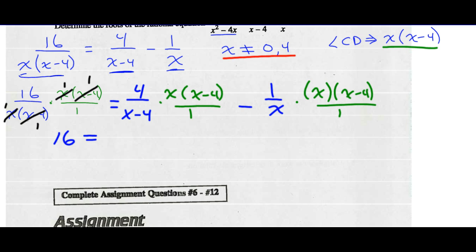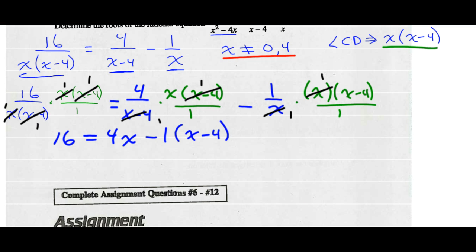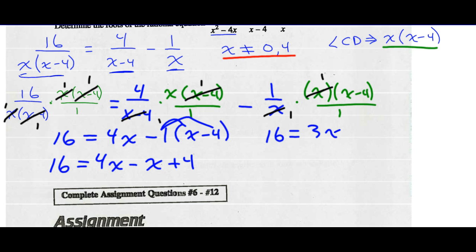The first term becomes 16. For the second term, x minus 4 divided by x minus 4 reduces to 1, leaving 4 times x over 1 — so that's just 4x. For the last term, the x reduces to 1, leaving negative 1 times x minus 4 all over 1. Multiply through by negative 1: negative x plus 4. Combining like terms: 16 equals 4x minus x is 3x plus 4. Subtract 4 from both sides: 12 equals 3x. Divide both sides by 3: x equals 4.